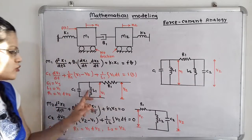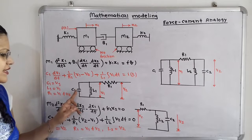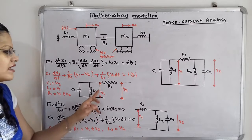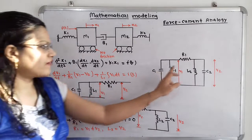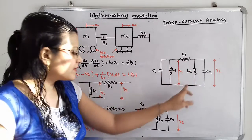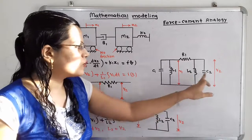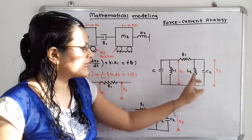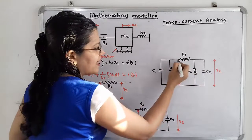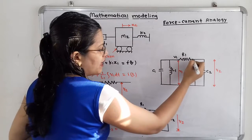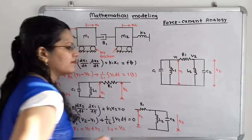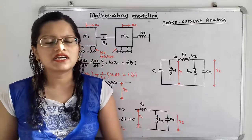Now we combine both electrical circuits into the final analogous electrical network. Starting from the source I(t): C1 and L1 are in parallel at node V1; then R1 connects in series from V1 to V2; and at node V2, L2 and C2 are in parallel. At the start of R1, voltage is V1, and at the end, voltage is V2, confirming that R1 is between V1 and V2. This is the complete analogous electrical network for the given mechanical system.